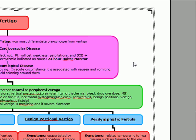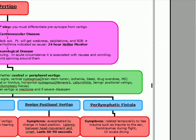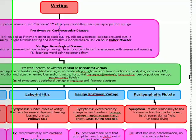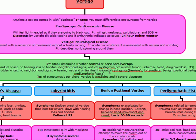Vertigo presents differently — the patient gets a sensation as if they're moving when they're actually not moving, like the world is moving around them. They'll come in with nausea and vomiting. Once we conclude the patient has vertigo, the next step is to determine whether it's central or peripheral vertigo. The key difference: central has gradual onset, peripheral has sudden onset. In central vertigo, there's no hearing loss or tinnitus, and there's vertical nystagmus.